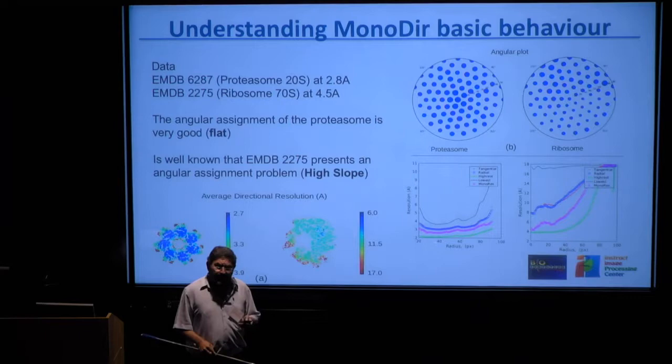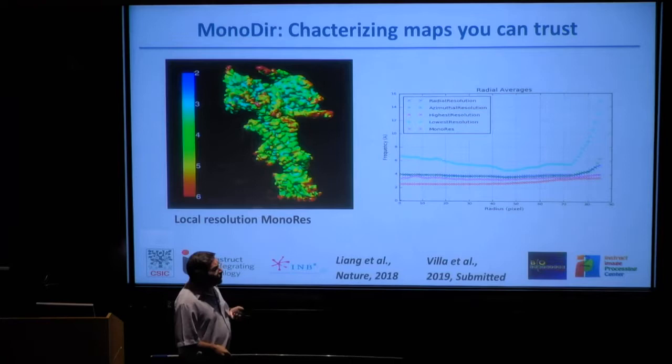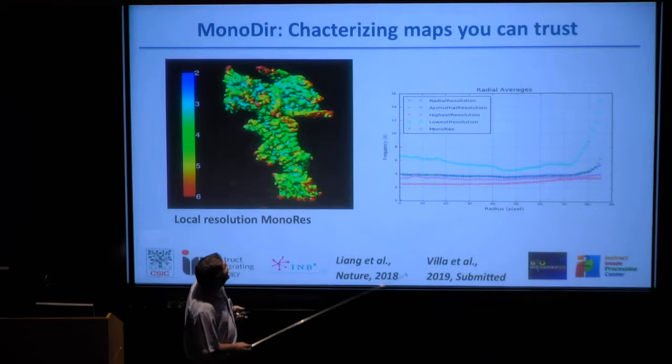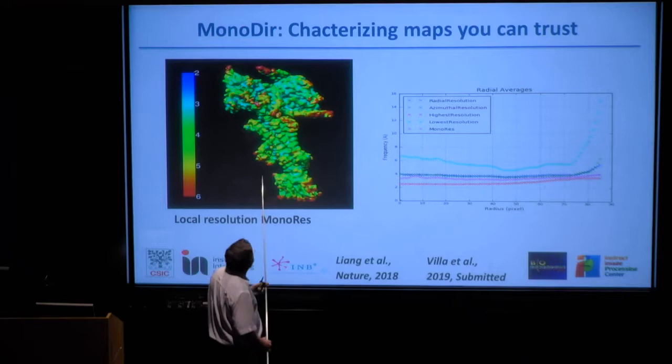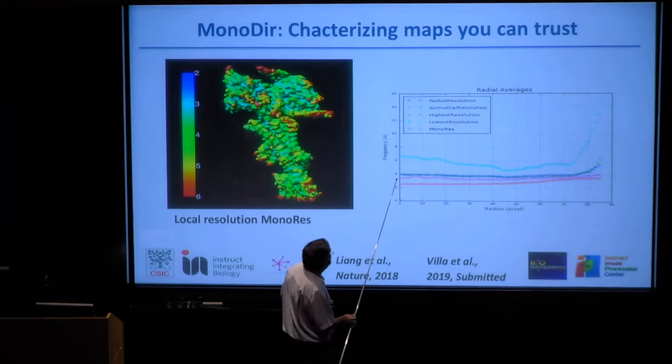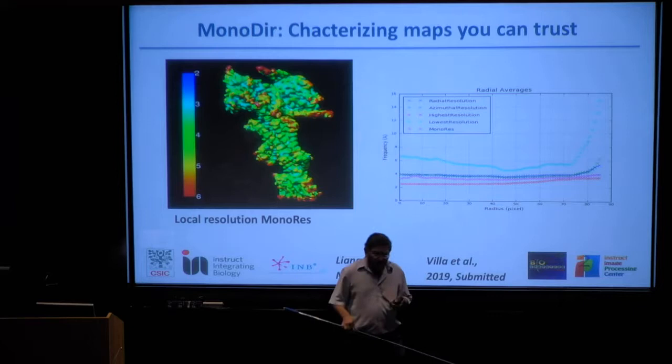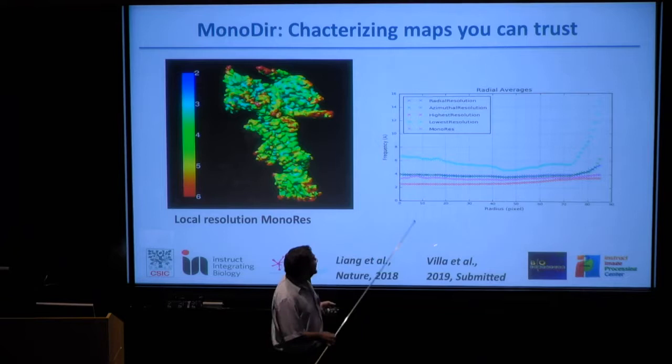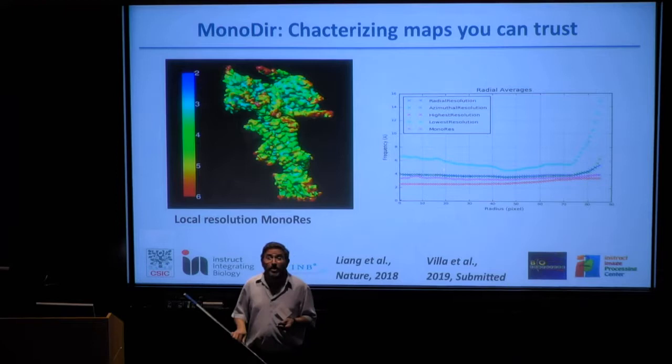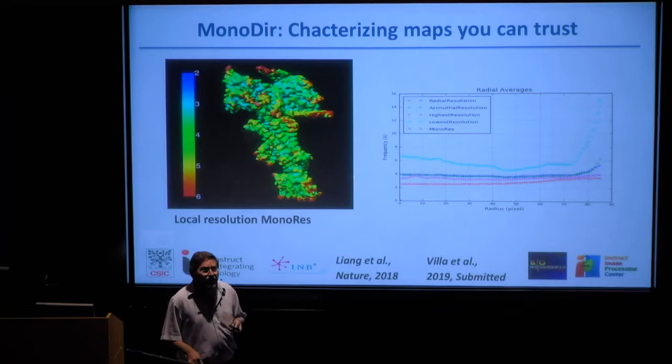This is one application — a GPCR reconstruction from the Saxton Group in Monash. We worked with them to see how well determined the angular assignment had been in their case, and it was a very good example of well-determined angular assignment. So we were happy to have something new to contribute to the field of map validation.